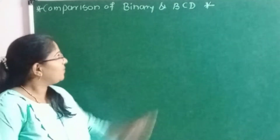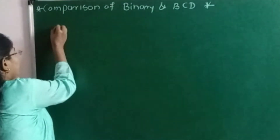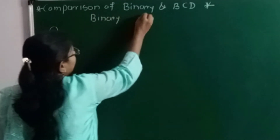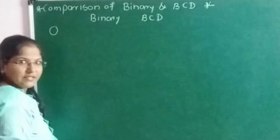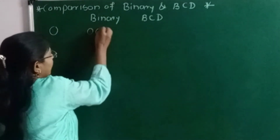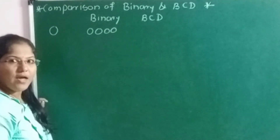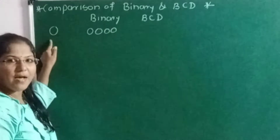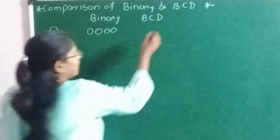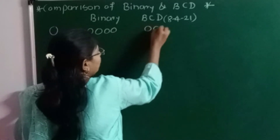We will convert those numbers into binary as well as BCD. The first number is 0. How to write 0 in binary? Using 4 bits, write 4 times 0. How to write the BCD equivalent for any decimal digit? We have to replace each digit using 4 bits and the 8421 code. So to write 0 in BCD, I will write 4 times 0.